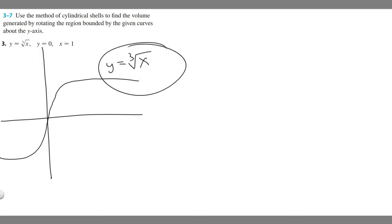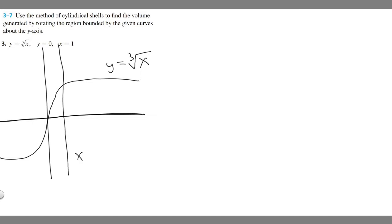So this is y equals the cube root of x. One of our other curves is going to be y equals zero, and keep in mind we're only going to be focusing above this. One of our lines is going to be x equals one. This is x equals one, this is y equals zero. We're rotating around the y-axis, so if you look at what we form, we're going to be finding the volume of this area right here.